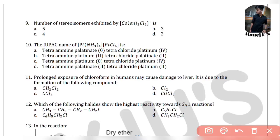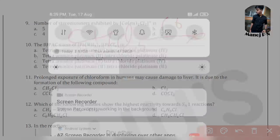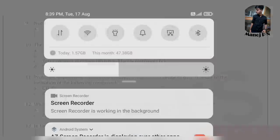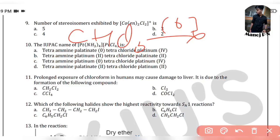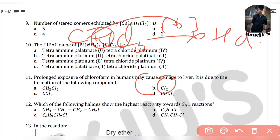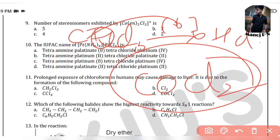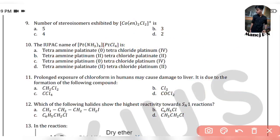Question 10: prolonged exposure of chloroform (CHCl3) in humans may cause damage to the liver. This is due to the formation of a toxic component. CHCl3 when exposed leads to a reaction product that damages the liver.